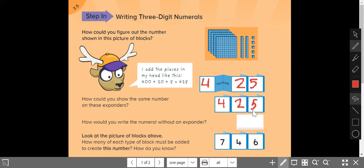How could you write the numeral without the expander? Well, we just write the numbers: 400, 20, 5.